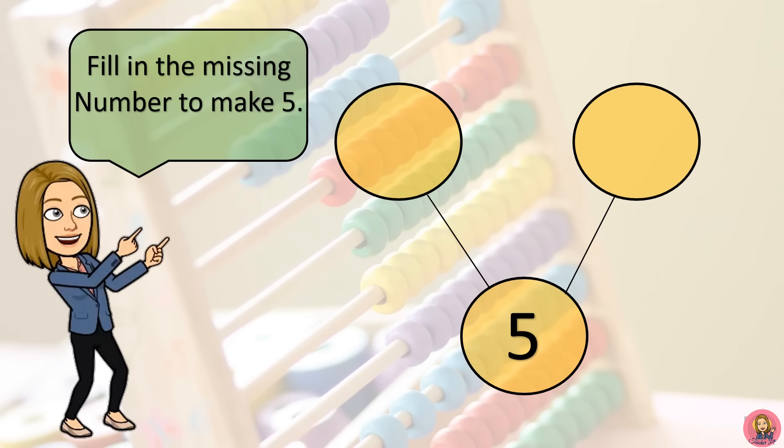So, 5 is made up of 4 and 1. Which means, 5 can be taken apart by 4 and 1.